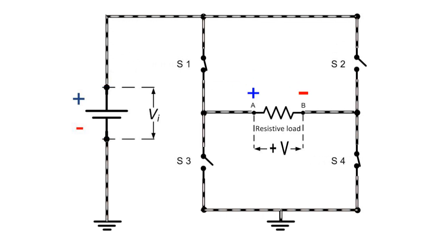So in this way, unidirectional DC is converted to bidirectional AC.